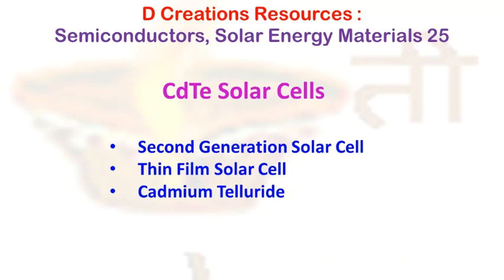Another popular system is copper indium gallium selenide, or CIGS. These solar panels do not include a toxic material like cadmium, so they are less toxic than CdTe. However, they have some disadvantages compared to CdTe — their efficiency is lower and production is also more costly. Different applications may require certain types of solar cells; for example, if solar panels are to be used in windows, CIGS are the preferred system.